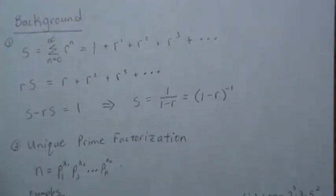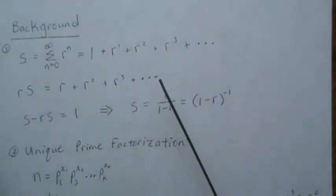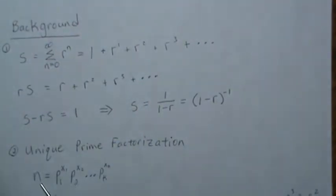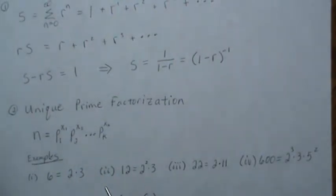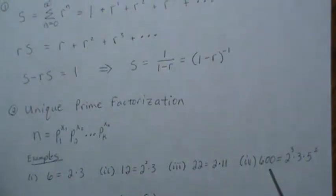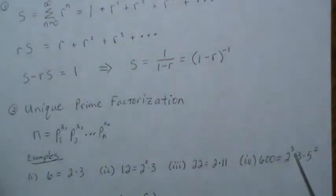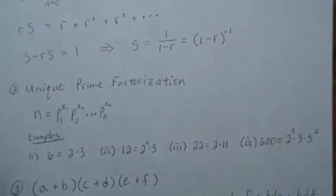Next: every positive integer has a unique prime factorization. Here are some examples — 6 is 2 times 3; these primes can be raised to a power, so 12 is 2 squared times 3; 22 is 2 times 11; 600 is 2 cubed times 3 times 5 squared. Every positive integer has a unique factorization.